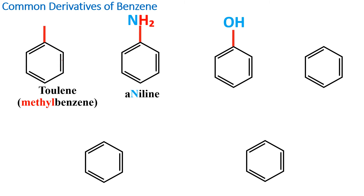The next one is called phenol, and you see there's an H and an O. So this benzene ring is attached to an oxygen and a hydrogen — phenol.